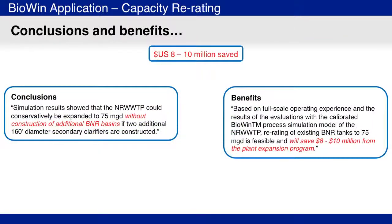Based on the BioWin analysis, it was concluded that the Neuse River Wastewater Treatment Plant could be expanded to 75 million gallons per day with no additional activated sludge basins, as long as two additional secondary clarifiers were constructed. This finding translates to a savings of $8 to $10 million in the plant expansion program.